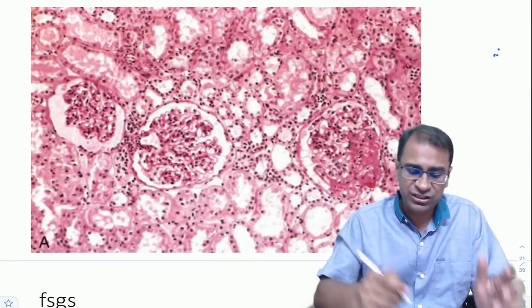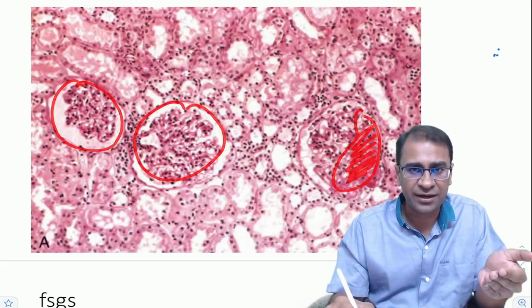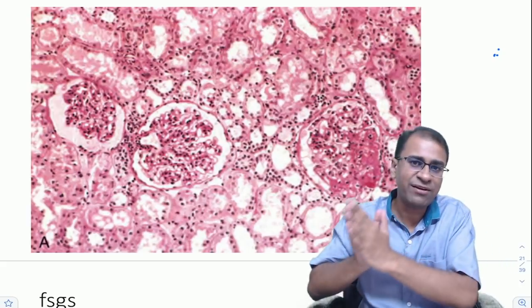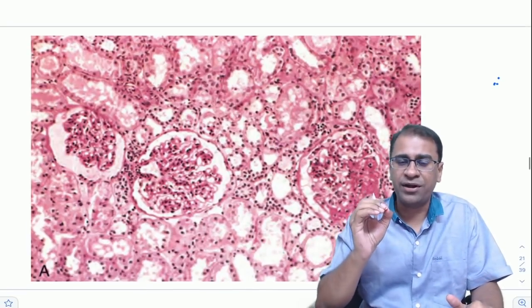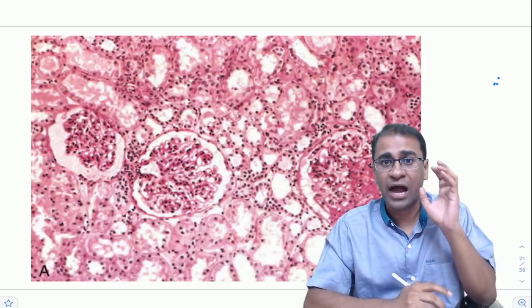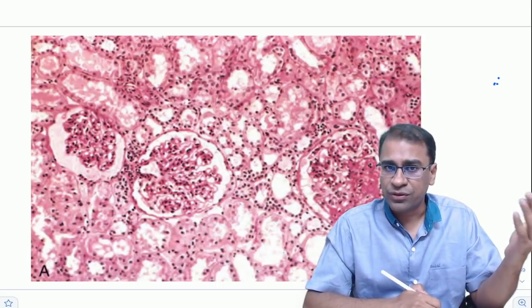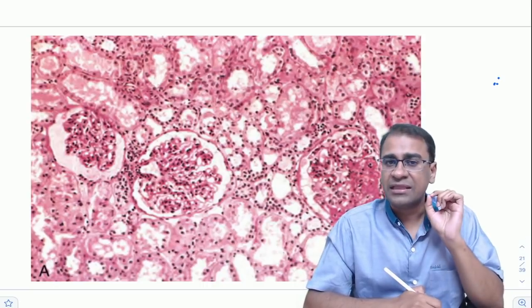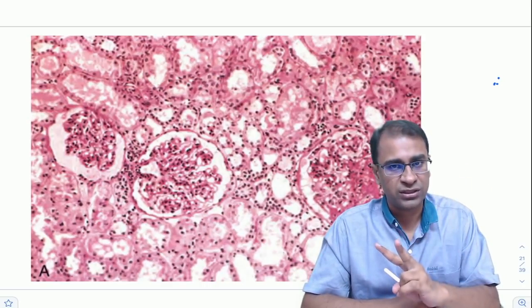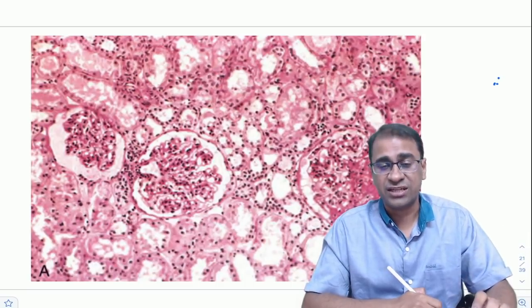Next is FSGS. You see a normal glomerulus next to a sclerosed glomerulus. When sclerosis affects only part of the glomerulus it is segmental; when it involves less than 50% of glomeruli it is focal — hence focal segmental glomerulosclerosis. Important etiologies include reflux nephropathy, hypertensive nephropathy, sickle cell disease, massive obesity, and hypertension. It can also be seen in congenital nephrotic syndrome. In HIV, FSGS presents as collapsing glomerulopathy with tubular necrosis, which carries the worst prognosis.